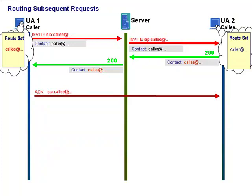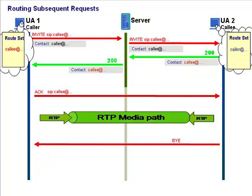It's almost as if the server isn't needed anymore — and actually, that's exactly what it is. The server has already performed its location task; there's nothing more we need it to do. The ACK goes direct, confirming reliable delivery of the final response to the INVITE and triggering the exchange of media packets. Likewise, when either party wants to send a BYE or any other subsequent request, it grabs the address from the route set and puts it in the request URI before sending the request out over the network.